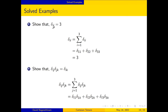Example 2: Show that delta_ii equals 3. The repeated index is i, so summation from i equals 1 to 3 gives delta_11 plus delta_22 plus delta_33 equals 1 plus 1 plus 1 equals 3. Hence delta_ii equals 3.